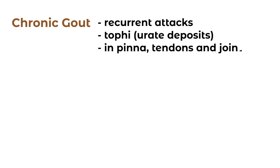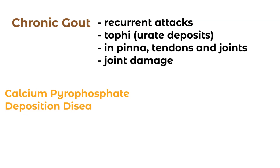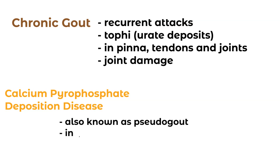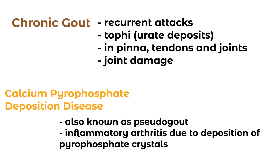When we talk about pseudogout — also called calcium pyrophosphate deposition disease — this is an inflammatory arthritis due to deposition of pyrophosphate crystals, not urate crystals. It's associated with osteoarthritis, hyperparathyroidism, and hemochromatosis. Pseudogout usually affects large joints, classically the knee, in older people above the age of 50. Treatment is largely similar, but the important thing to remember, especially from an exam perspective, is that they're calcium pyrophosphate crystals, which form basophilic rhomboid crystals under the microscope, as opposed to the urate crystals described earlier.